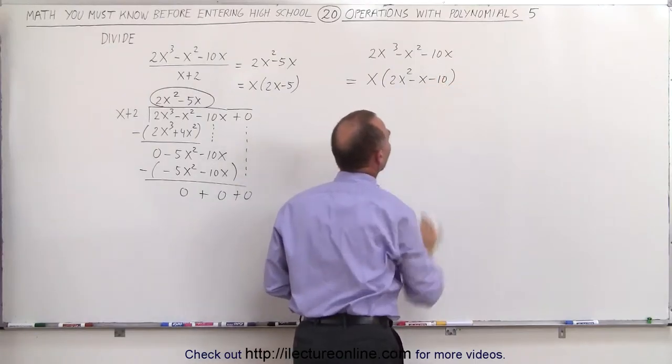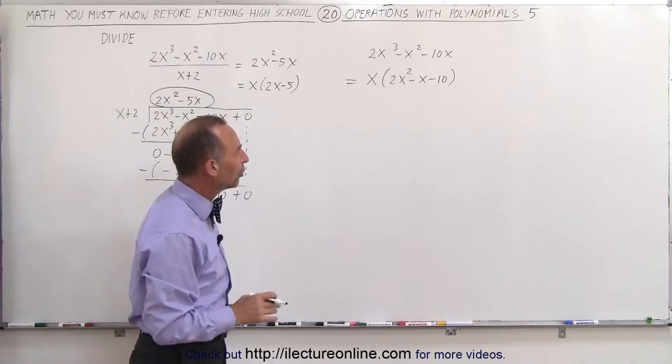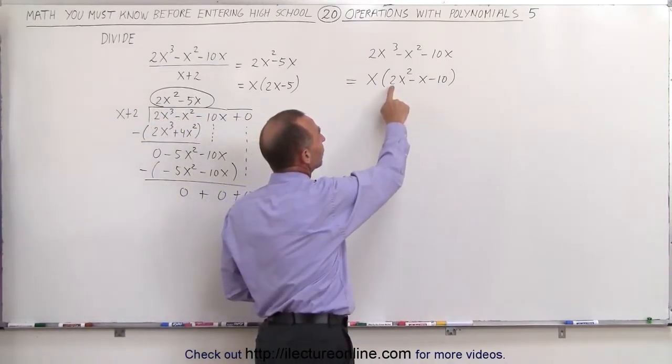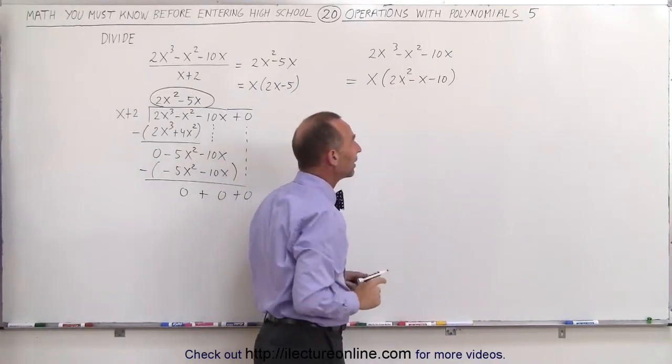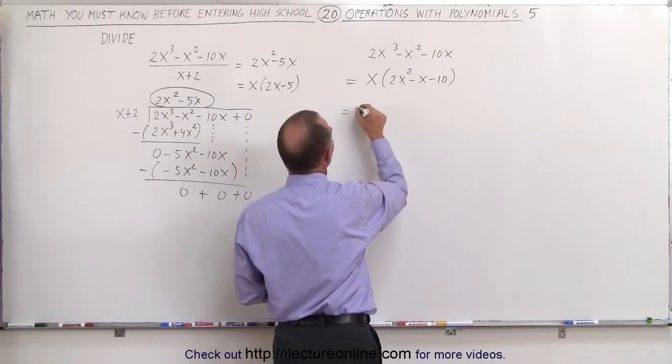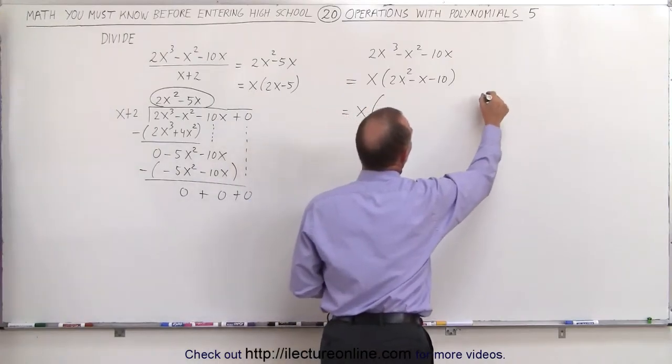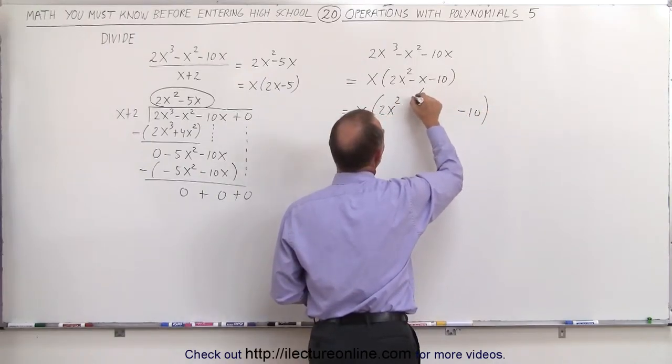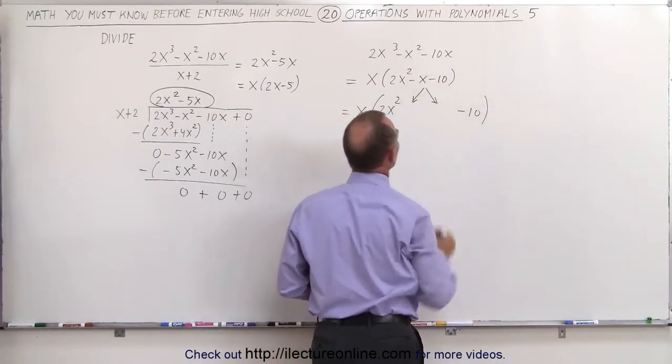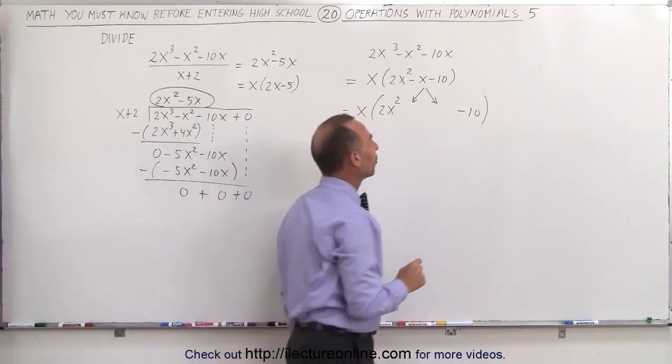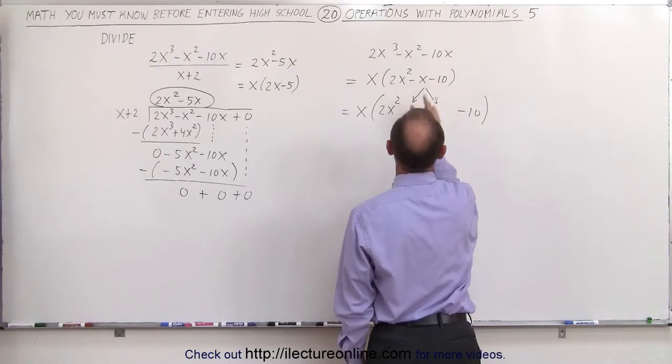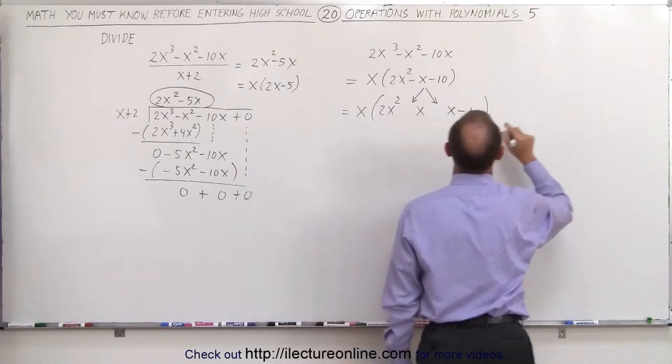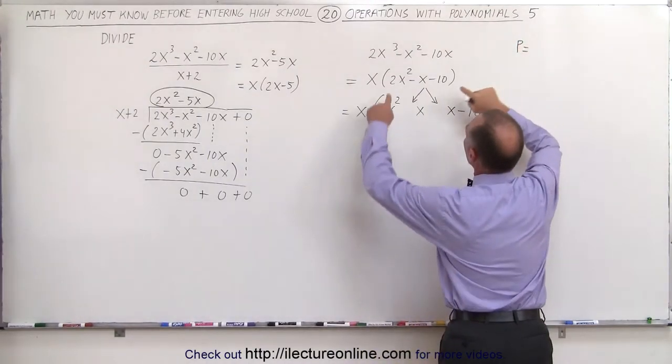Now, the question is, we have this trinomial here, can we factor that trinomial? And the answer is yes. It's a little bit more difficult because we have a 2 in front of the x squared term, but nevertheless, what we could do is we could write this as x times, and write the first term, write the last term, and then we're going to take the middle term and divide it up into two terms. We're going to put an x there and x there.